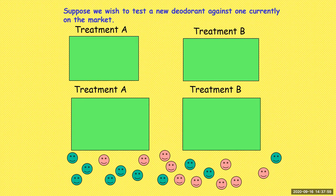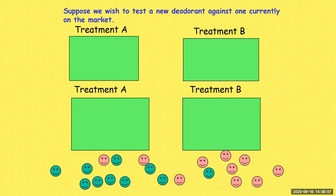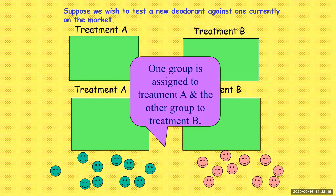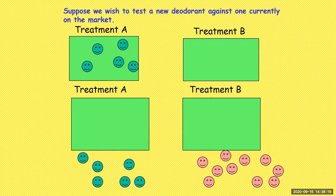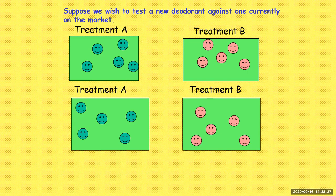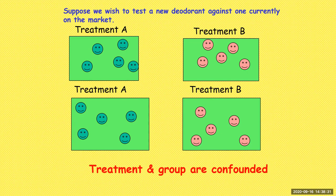Suppose we wish to test a new deodorant against one currently on the market. We separate subjects into two homogeneous groups — one group assigned to treatment A and the other to treatment B. If all of one group gets all of A and the entire other group gets treatment B, we can't determine if the treatment is really making a difference, because we don't know if it's based on the gender separation or the treatment itself — what we call confounding.